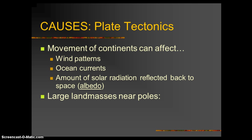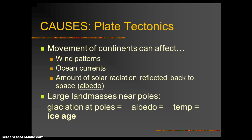Large land masses, when they're near the poles, the trend is this: there's an increase in glaciation at the poles. Land is a place for the snow to accumulate. If snow hits water, water has a higher heat capacity and can melt the snow, but land is going to be colder and therefore the snow will accumulate on it. So if you have land masses near the poles, you're going to have more glaciation.